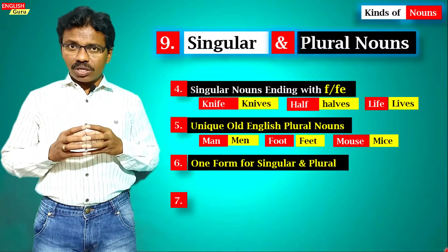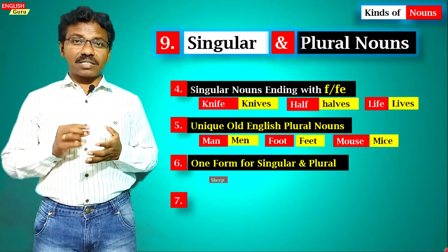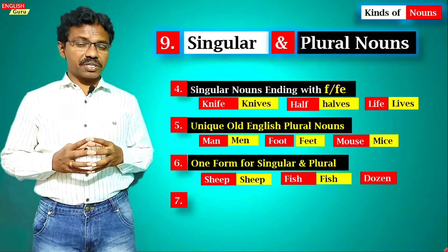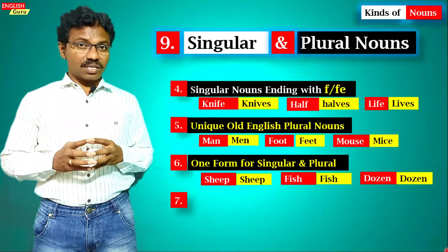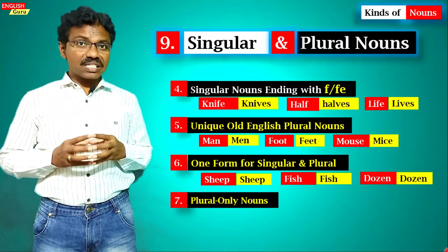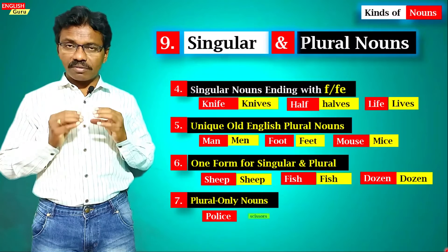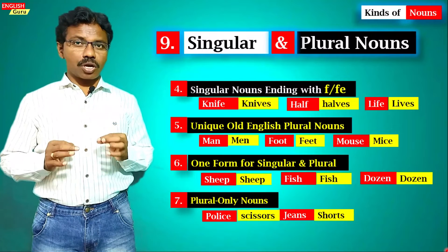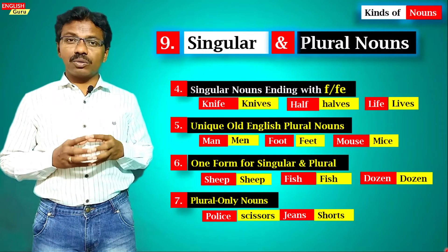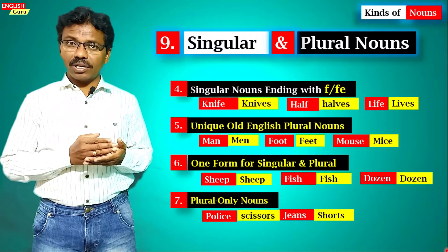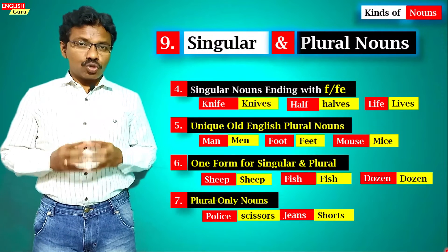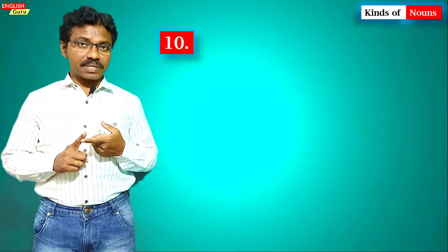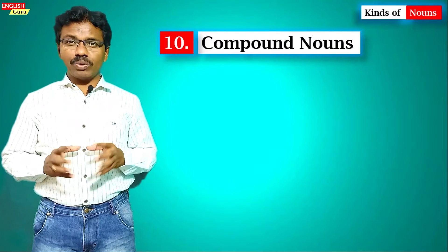Some words are used as both singular and plural — for example, 'sheep,' 'fish,' and 'dozen.' However, certain nouns are always used in plural form — for example, 'police,' 'scissors,' 'jeans,' and 'shorts.' These are all the ways we change a singular noun into a plural noun. A singular noun represents only one, while a plural noun represents more than one.